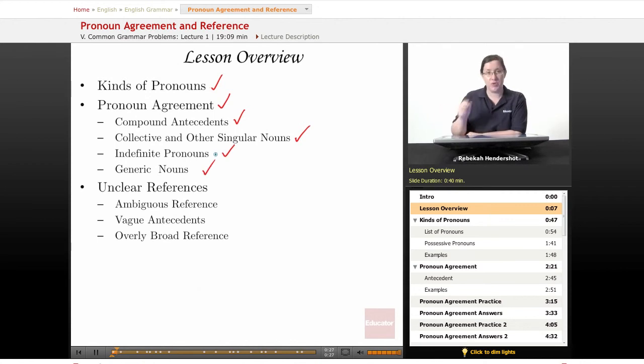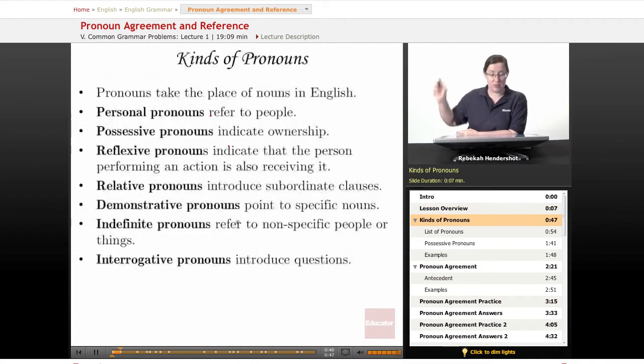and generic nouns. Then we're going to look at unclear references, where you use a pronoun and people aren't really sure what it's replacing. We're going to look specifically at ambiguous reference—it could be this or it could be that—vague antecedents where it's just so fuzzy you have no idea, and overly broad reference. And then we're going to do some practice.